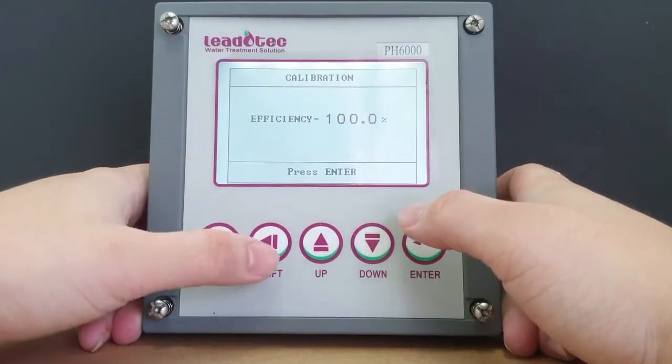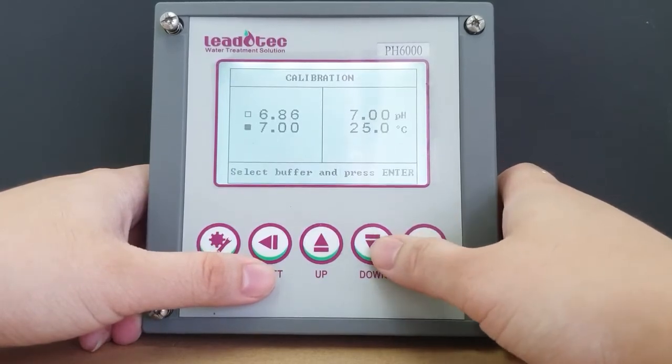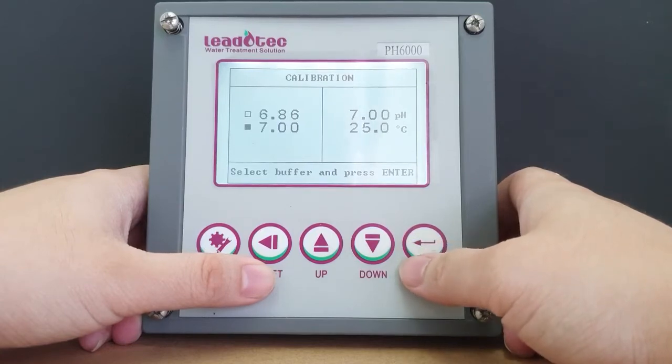On this page, it will show you the calibration efficiency for the previous calibration. To proceed, press enter once and select the first point buffer.